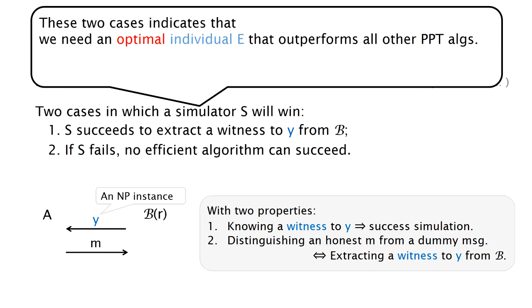However, these two cases in which the simulator will win indicates that we may need an optimal individual extractor that outperforms all other efficient algorithms. The problem with this approach is that it seems hard to bound the size of the extractor and it may run in super polynomial time.